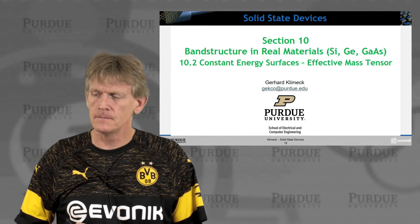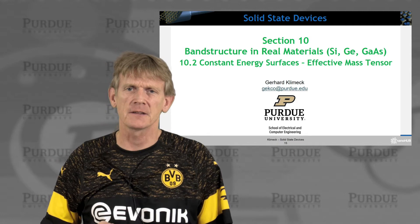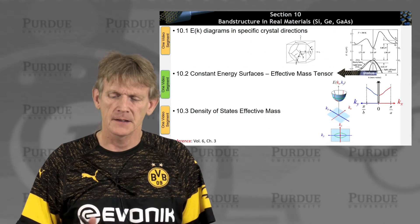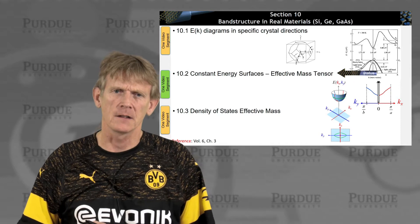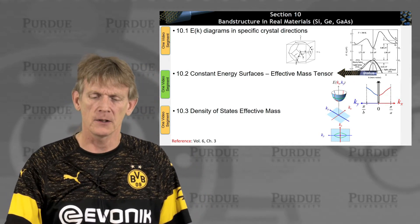So here we are. I want to discuss now constant energy surfaces and an effective mass tensor for real materials. That's again in the context of having calculated band structure, and I interpret it in the EK diagrams.